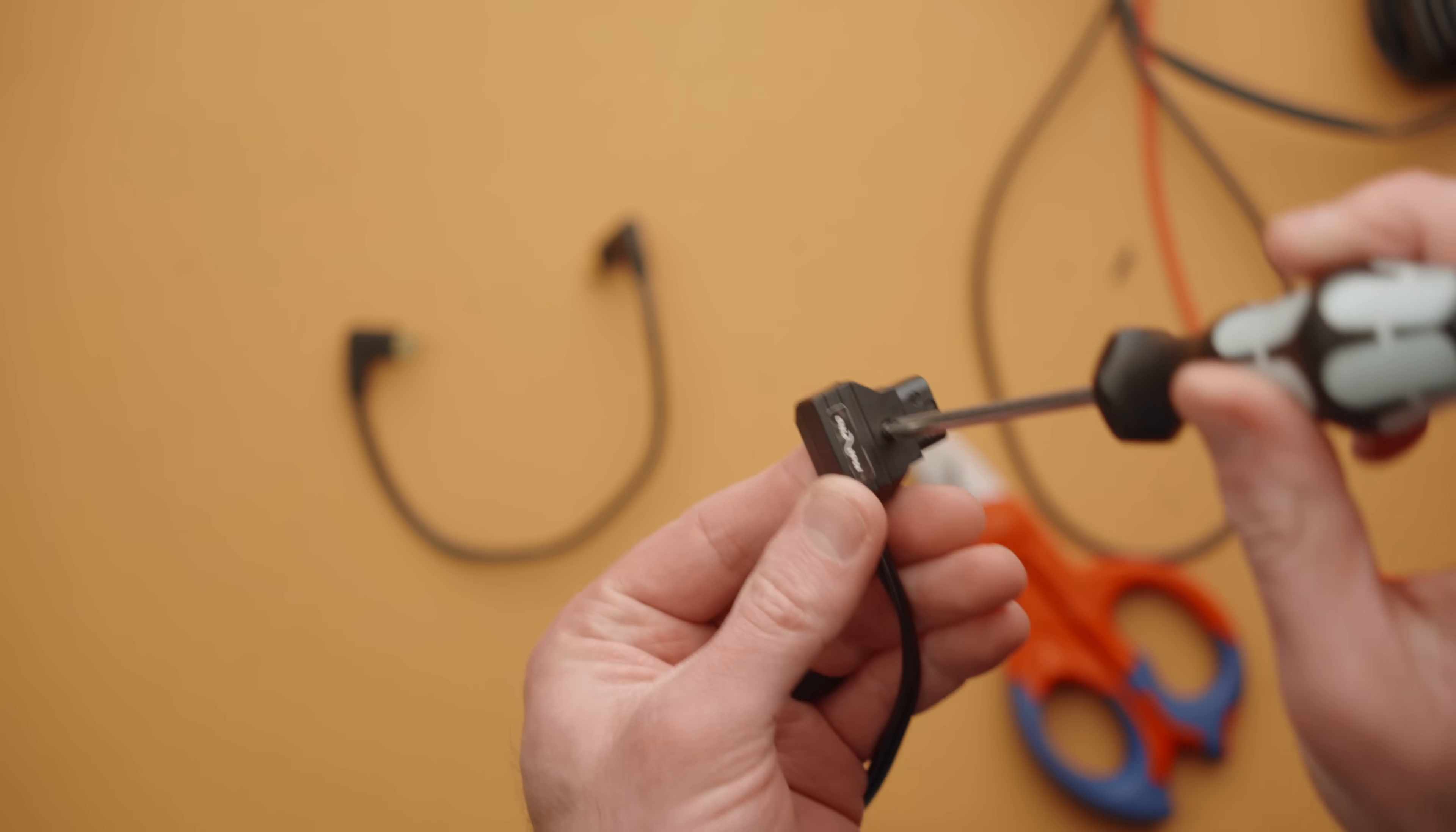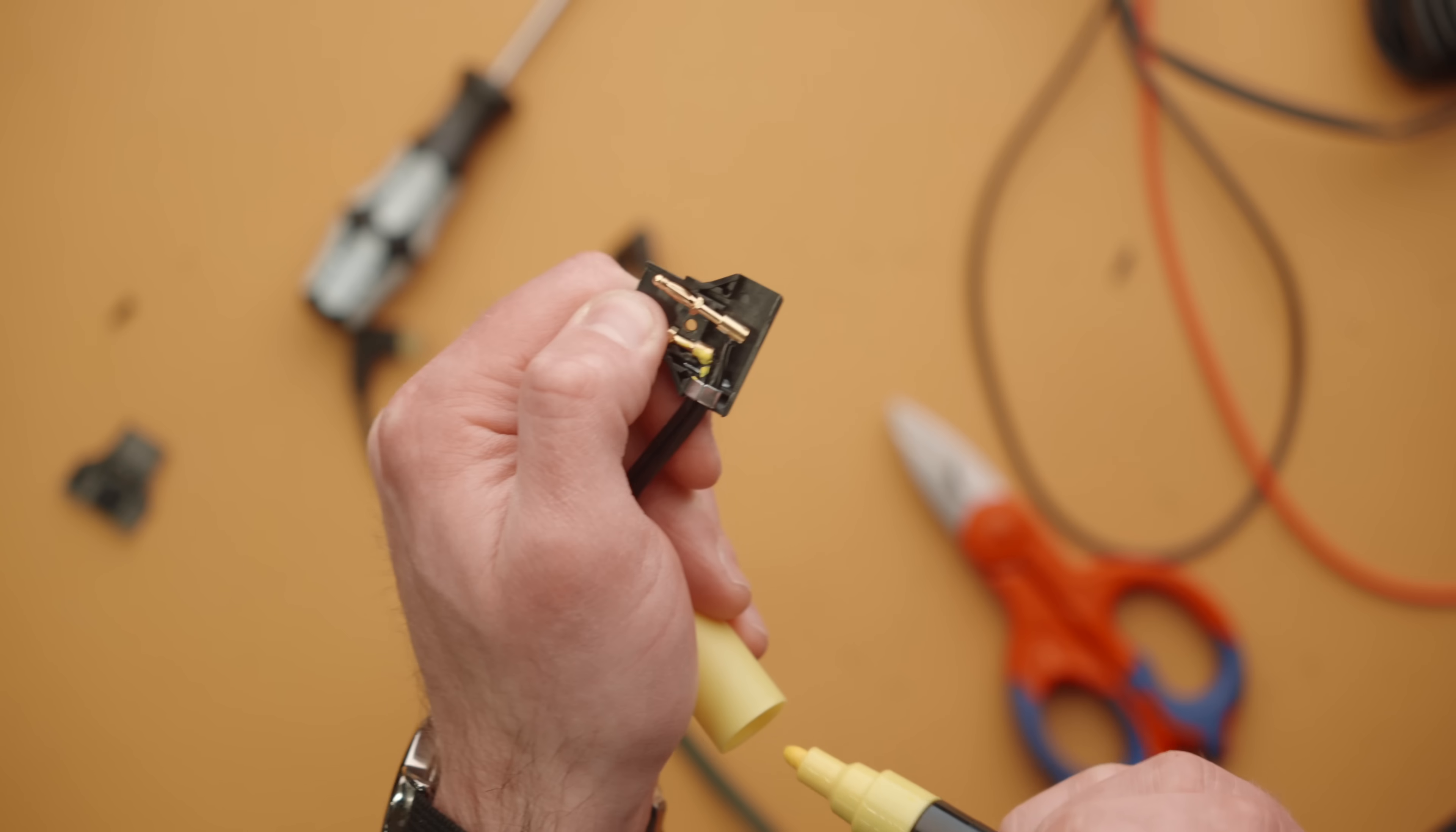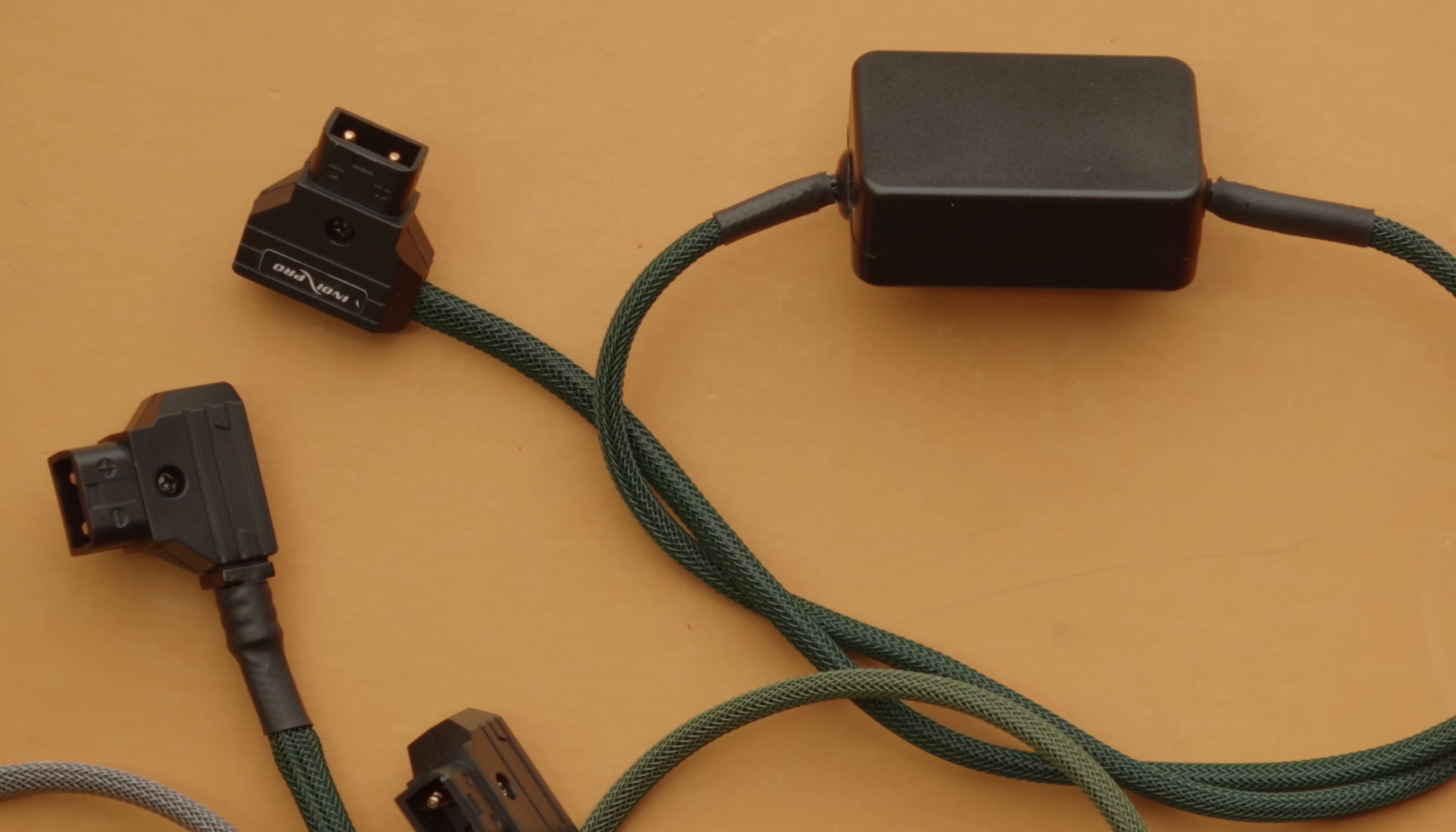This time I wanted to get extra fancy, so I took apart the D-tap connector on the end, marked the positive connector so when I put it back together I wouldn't cross those two connections, ran sleeving over that end as well, and here's the end result with everything put back together. A nice clean meshed cable.